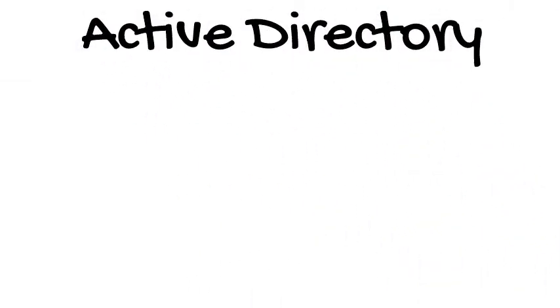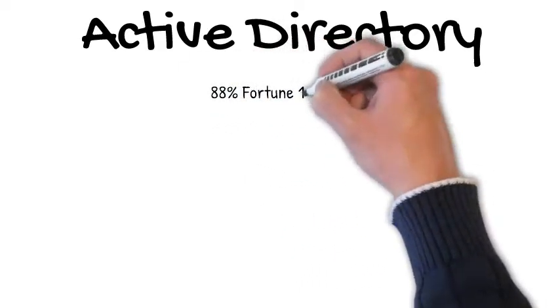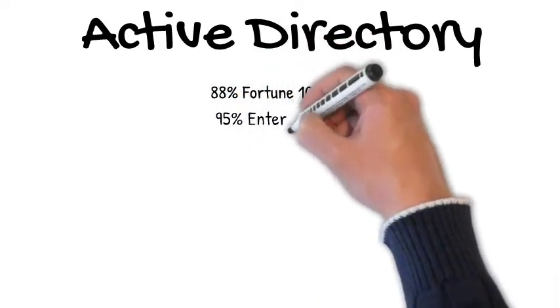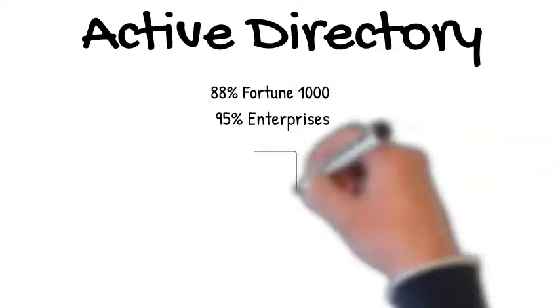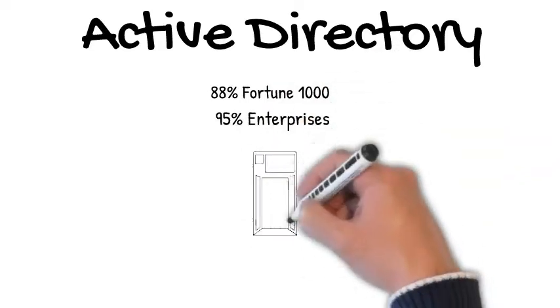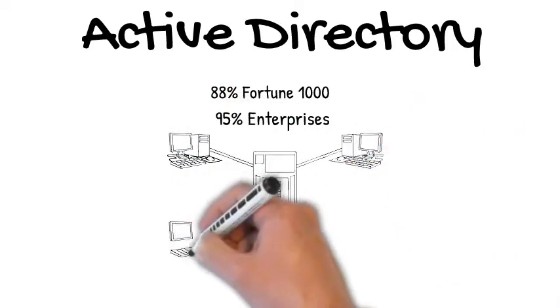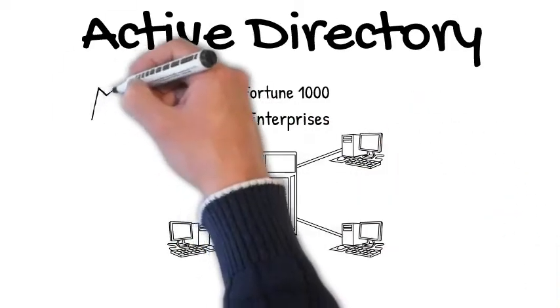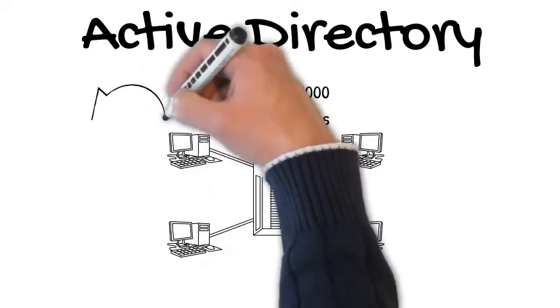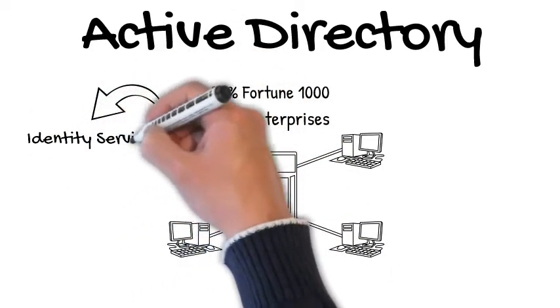Active Directory is a major management infrastructure that is used by 88% of Fortune 1000s and 95% of enterprises still today. It manages the infrastructure of servers, desktops, and laptops of the internal network computers, and it provides essential services that these machines rely on.